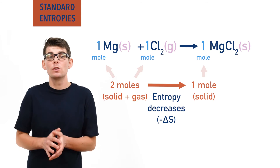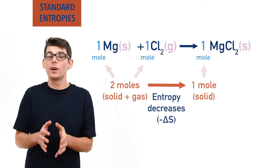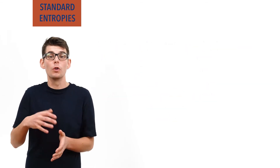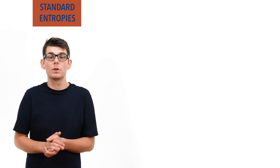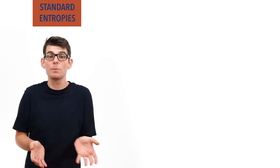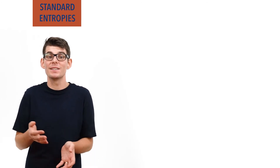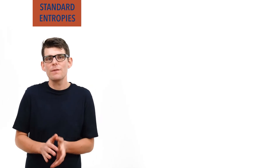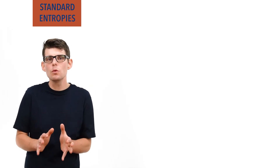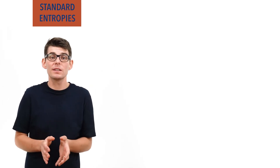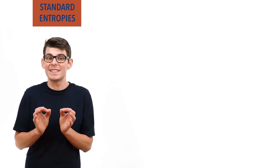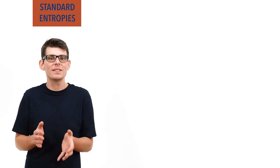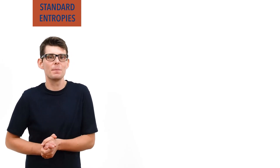This means we can identify whether some reactions are likely to have a positive or negative entropy change just by looking at the number of particles and states of the substances involved. This isn't always straightforward though, and certainly if we want to know exactly how much the entropy changes, we need to add in some numbers.